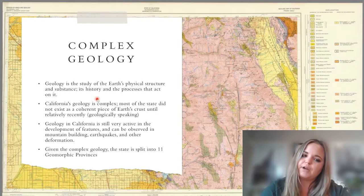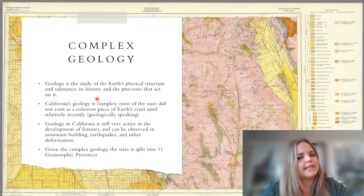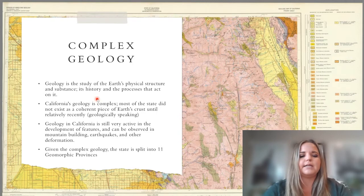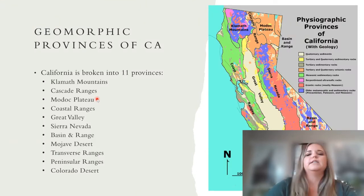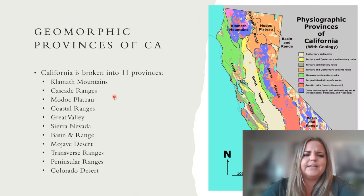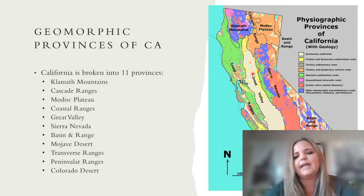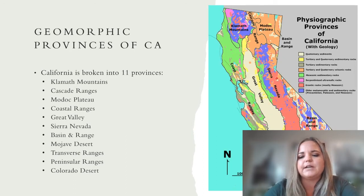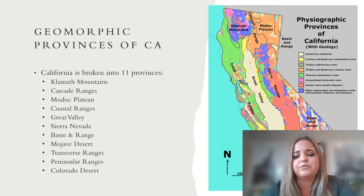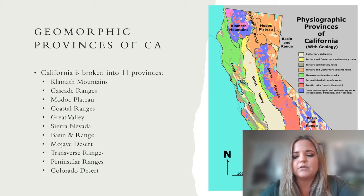These provinces are separations of the state dictated by the area, the types of rocks found there, their geologic history, and their geomorphology. Geomorphology is the study of the landscape — depending on how the landscape looks, it's separated into a separate province. Here are the 11 provinces of California. We live in the Great Valley, and most of you are probably familiar with the Sierra Nevada and the Coast Ranges.